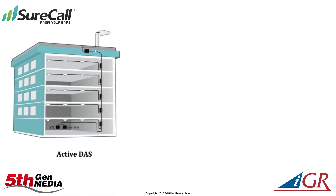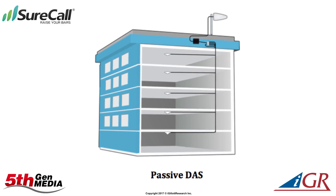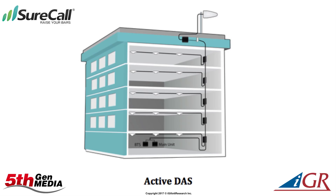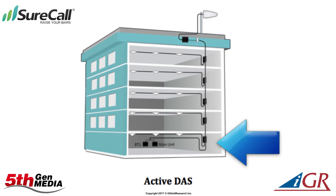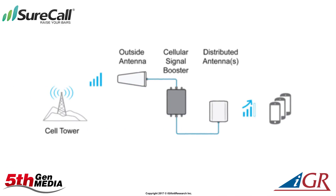There are two basic types of DAS: active and passive. Passive DAS uses unpowered antennas throughout a building, relying on the power of the central radio. Active systems use powered antennas, or nodes, which take the signal from the central radio and re-amplify it. Active systems can be tuned and controlled more accurately and are generally more flexible.